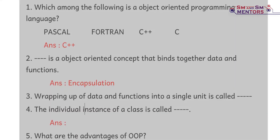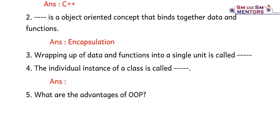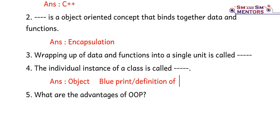The individual instance of a class is called an object. The blueprint or definition of an object is called a class. The class is the definition of an object, and the individual instance derived from it is called an object.